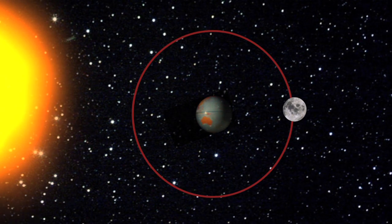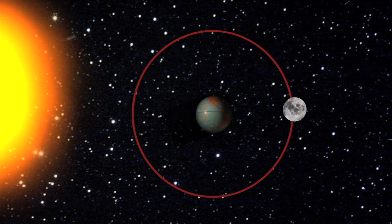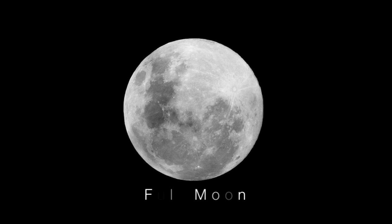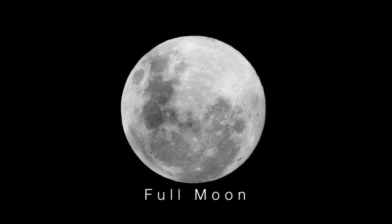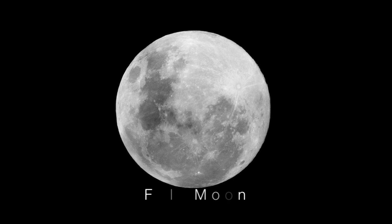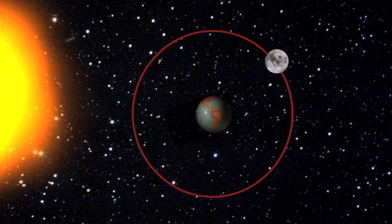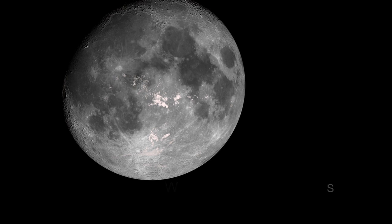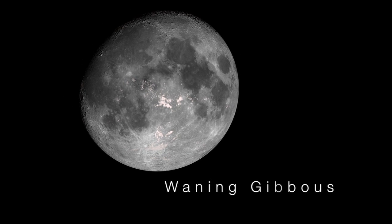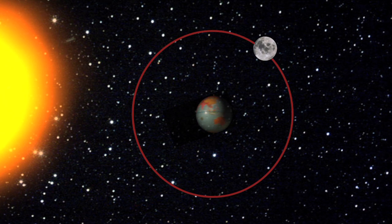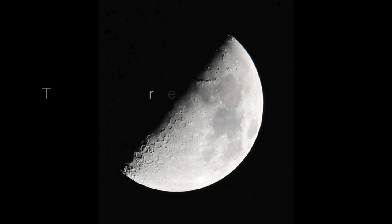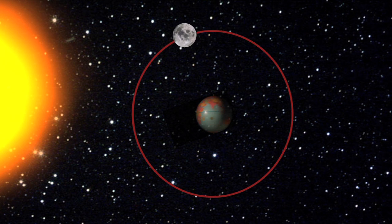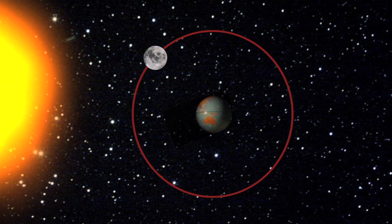When the moon moves to the opposite side of the Earth from the sun, almost all of the illuminated hemisphere can be seen. This is the full moon phase. The moon continues its orbit around Earth and less of the illuminated side is seen, causing the waning gibbous, the third quarter, and the waning crescent phases of the moon.